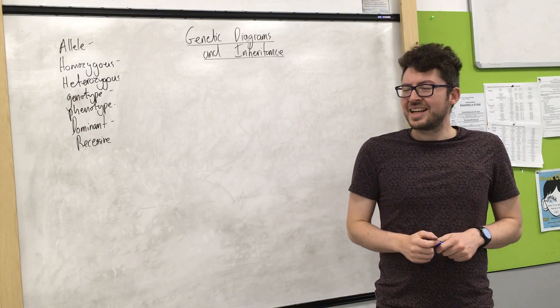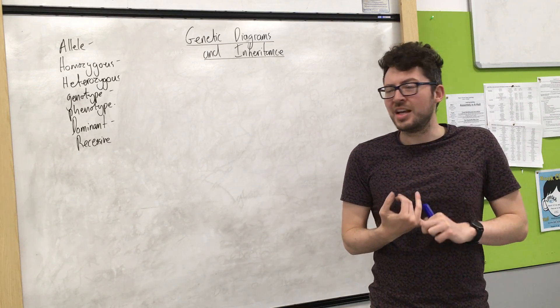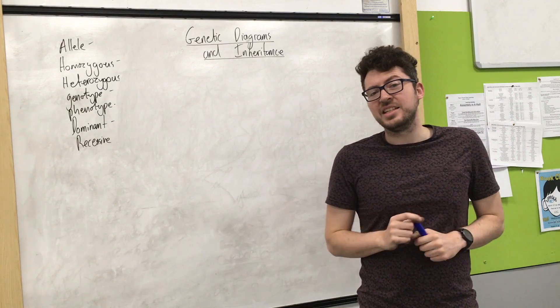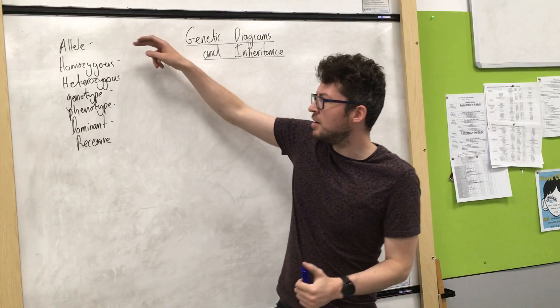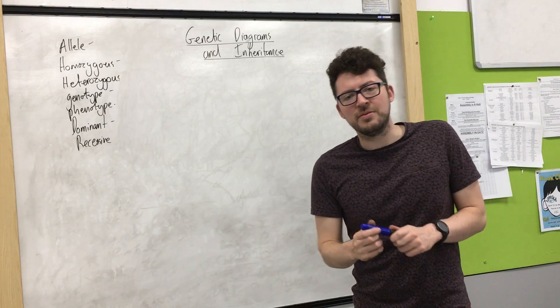Now this is a fairly tricky part of the course as you need to know a lot of key terms and how to use them to produce a genetic diagram, for higher tier anyway. So terms are allele, homozygous, heterozygous, genotype, phenotype, dominant and recessive.